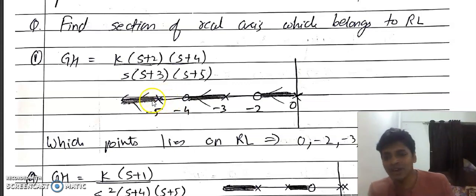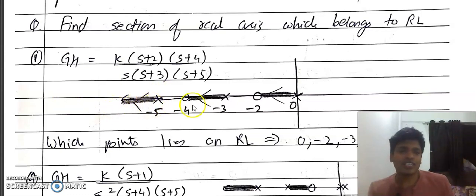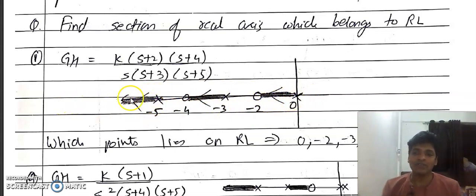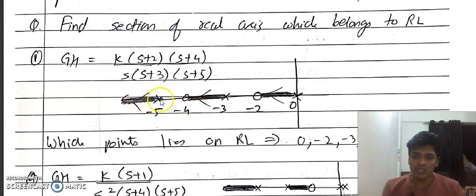From −5 to negative infinity: the total number of poles and zeros to the right is always five, and five is an odd number. Hence from −5 to −∞ is shaded. So this is the section of the real axis which belongs to the root locus.